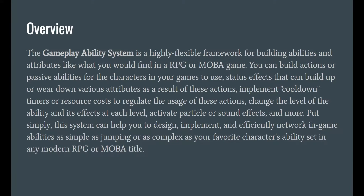The Gameplay Ability System is a framework to help you create any ability that you can think of. It allows you to create action abilities, something like shooting a fireball, or even passive abilities like a strength buff. It even has a system to implement cooldowns and resource cost. The effects of our abilities have a level of strength, which allows us to easily scale our abilities as our character levels up.